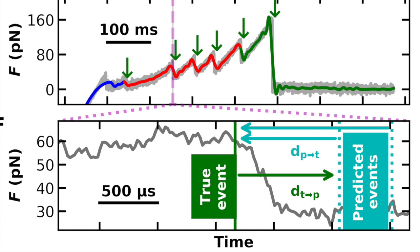And there are two types of distances you can define, from a true event to the closest predicted event, and from a predicted event to the closest true event.